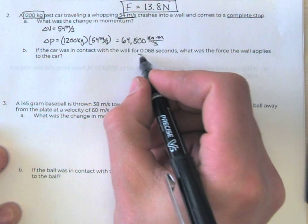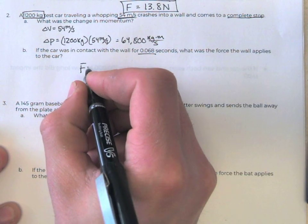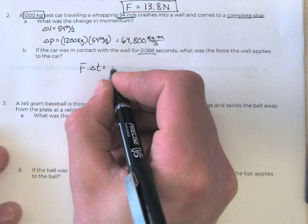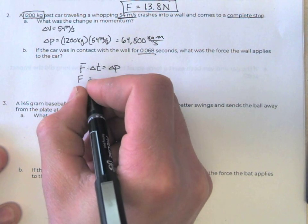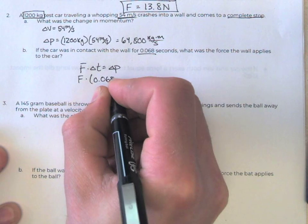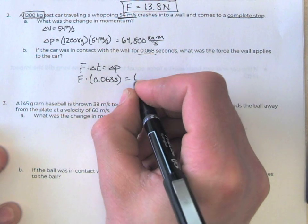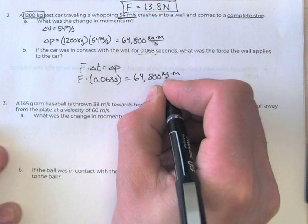If it was in contact with the wall for 0.068 seconds, what was the force? Well, we know that the force times the time equals the change in momentum. So the force times 0.068 seconds equals 64,800 kilograms times meters per second.